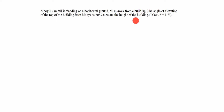is 60 degrees. Calculate the height of the building. A boy 1.7 meter tall — this is the boy, 1.7 meter tall, standing on a horizontal ground. 50 meter away from the building means here to here, 50 meter away from the building. So the building starts from here — this is the building, 50 meter away.